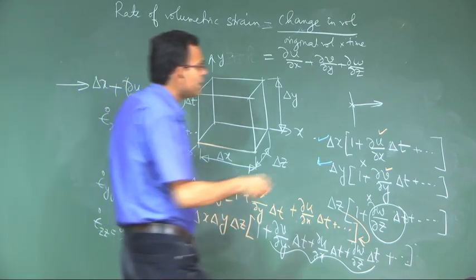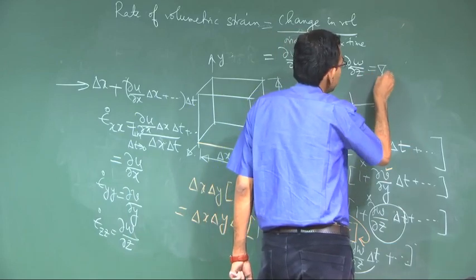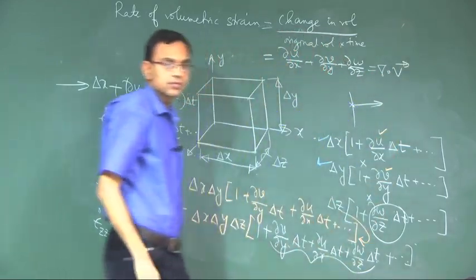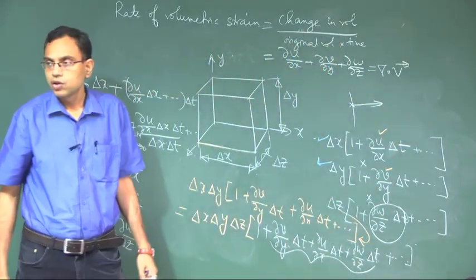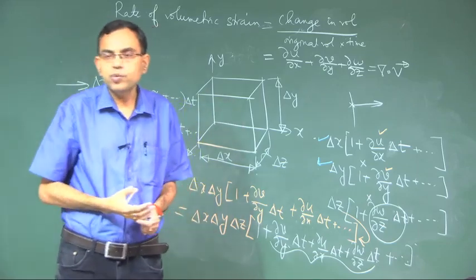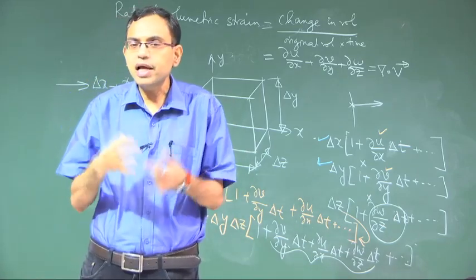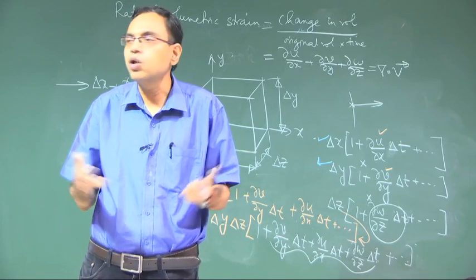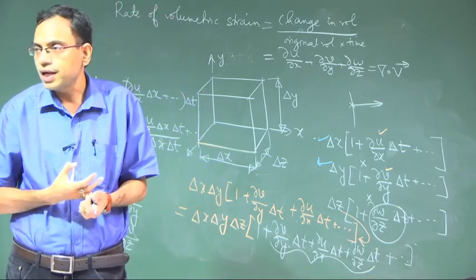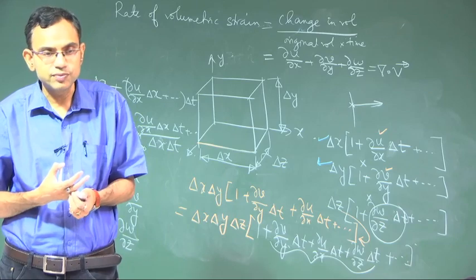This is nothing but the divergence of the velocity vector. A flow is said to be incompressible when there is no change in volume of a fluid element, and then the divergence of the velocity vector equals zero.